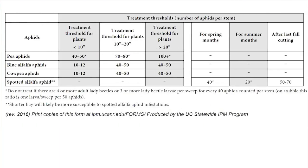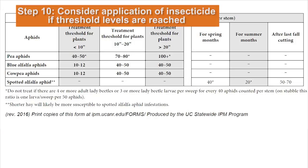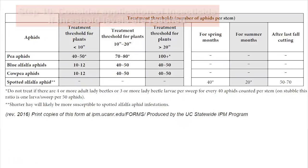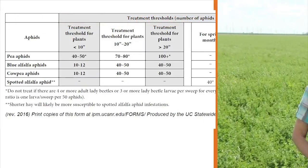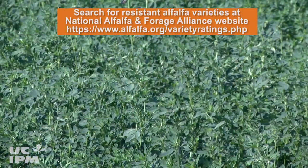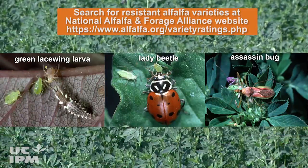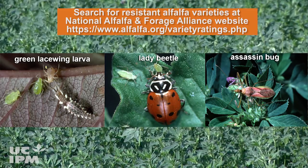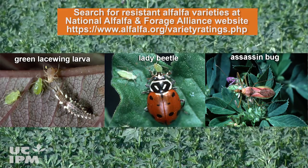If natural enemies are not suppressing the aphids, consider applying an insecticide when the numbers of aphids reach the levels listed in the treatment threshold tables. Remember, unnecessary pesticide applications are costly and may harm natural enemies of many pests. Using alfalfa resistant varieties and encouraging natural enemies save you money and protect our natural resources.